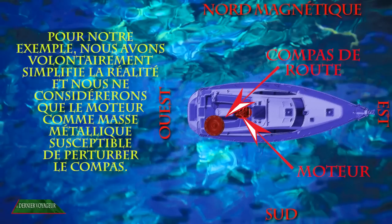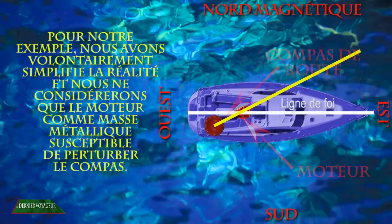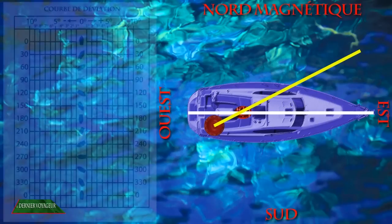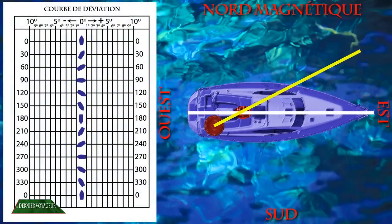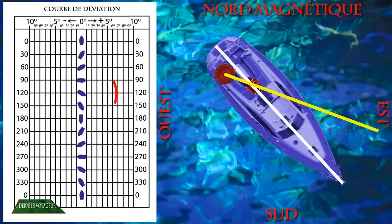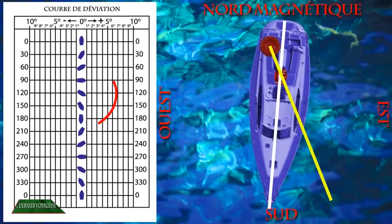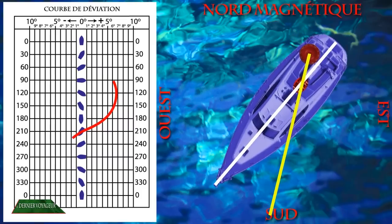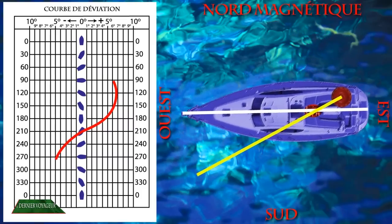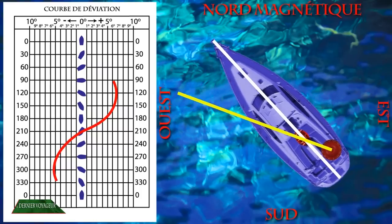A droite de l'image, nous avons représenté le compas et le moteur de notre bateau. Traçons l'axe de déplacement du navire et l'axe compas-moteur. Chaque bateau a des caractéristiques propres. Pour un couple compas-bateau, nous réalisons donc un graphique qui montre la déviation par rapport au nord magnétique en fonction du cap suivi. A gauche de notre vidéo est affiché un exemple de courbe de déviation. Les différentes positions des masses métalliques engendrent pour certains caps une déviation est positive et pour d'autres, une déviation ouest négative.